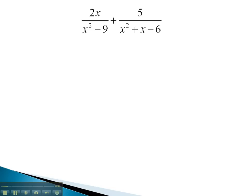In this problem, we notice we have different denominators. To find the LCD, we must first factor each denominator. The first denominator, with two terms, we notice is a difference of squares. It will factor to the sum and difference of the square roots, x plus 3, x minus 3.